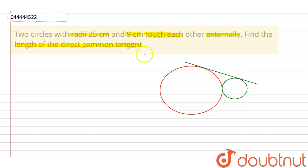At two different points. Now we need to find distance between this point of intersection. Let's say this is A and this is point B. Now we know that radius of this circle is equal to 25 cm and radius of this circle is equal to 9 cm.